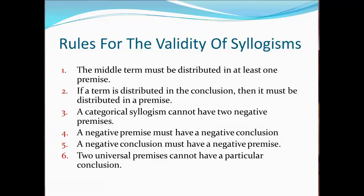To recap, here are the six rules for the validity of syllogisms. With practice, you will be able to apply these rules just knowing the mood and figure of an argument and determine its validity. Remember, if only one rule is violated, the argument is invalid. So as soon as you spot one rule violation, you don't need to apply the others.